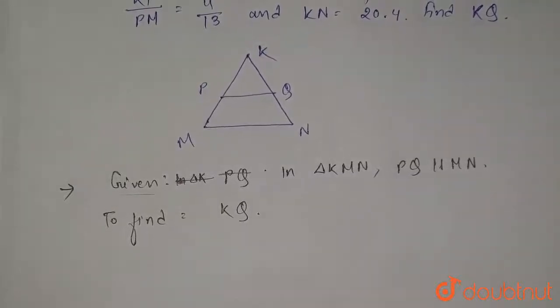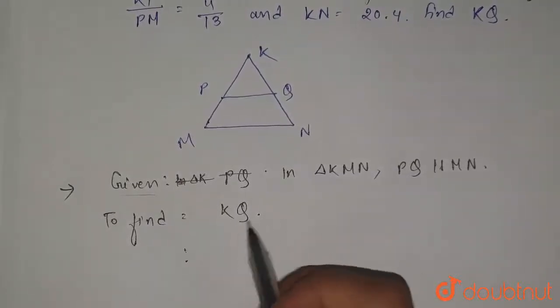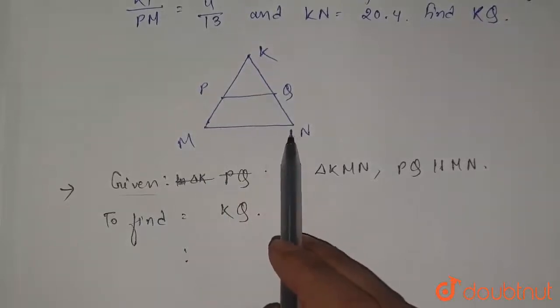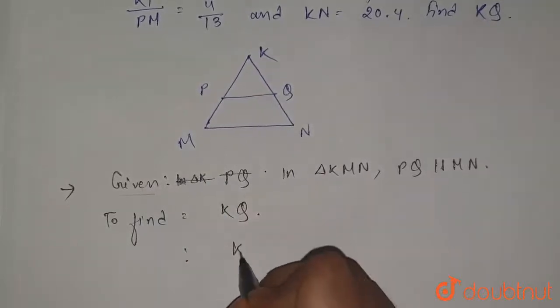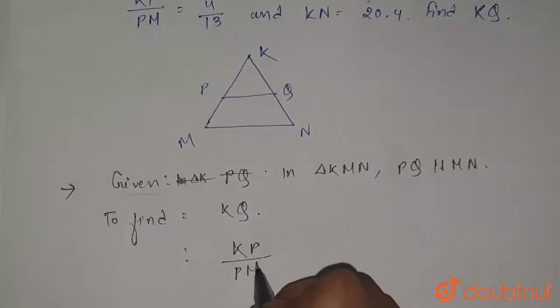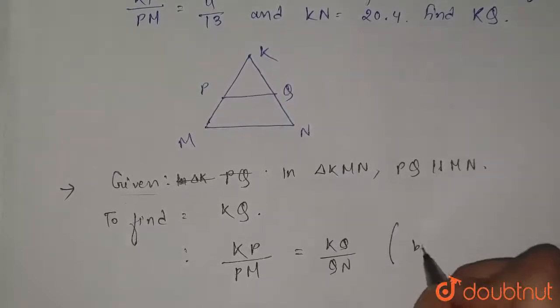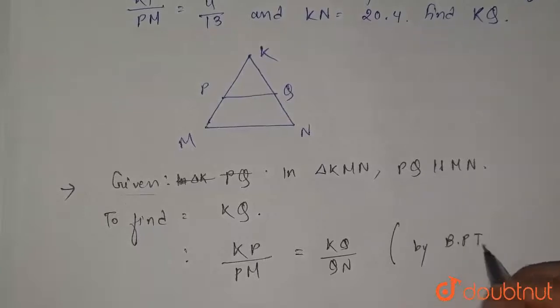Okay, now we can find the value of KQ. Since PQ is parallel to MN, from here we can write KP by PM equals KQ by QN, using the BPT, that is Basic Proportionality Theorem or Thales theorem.